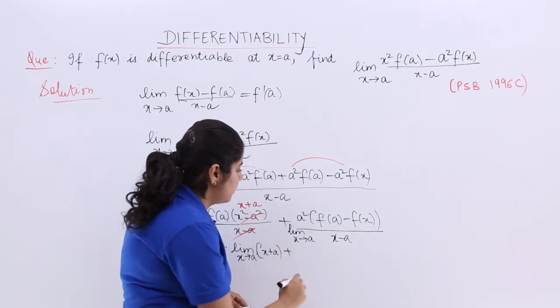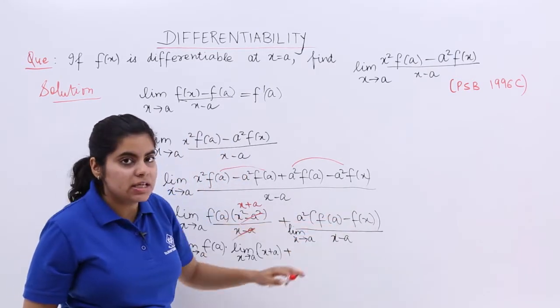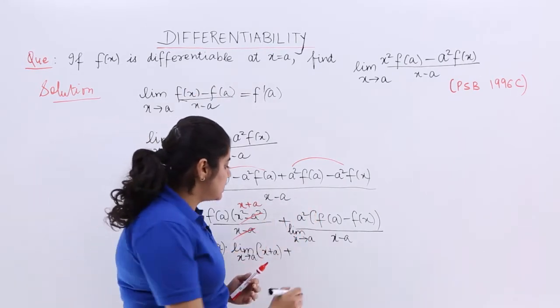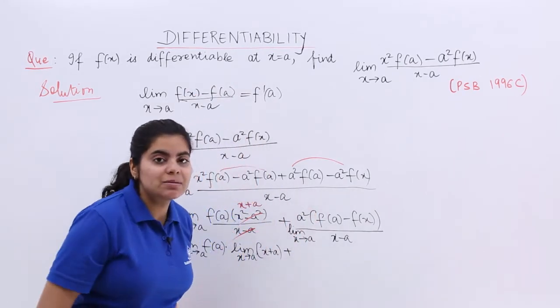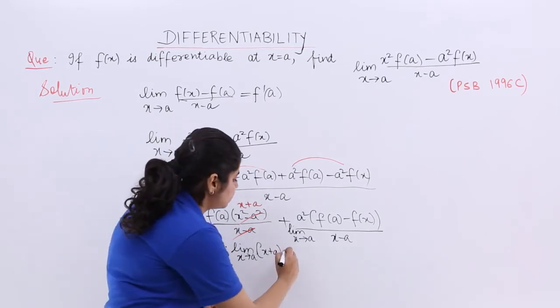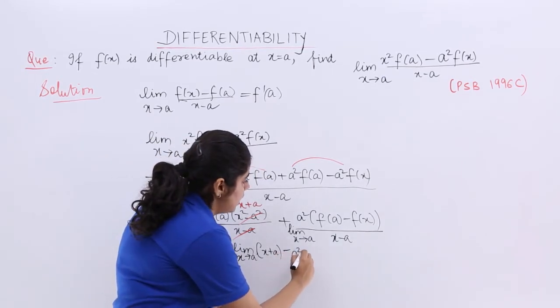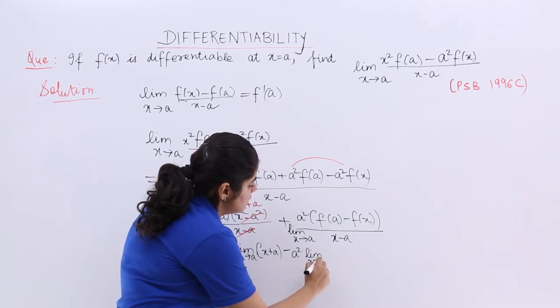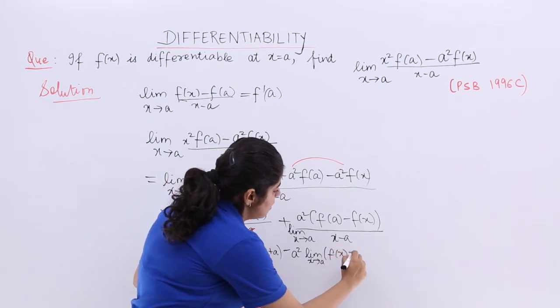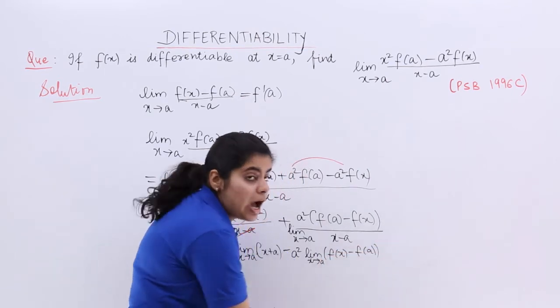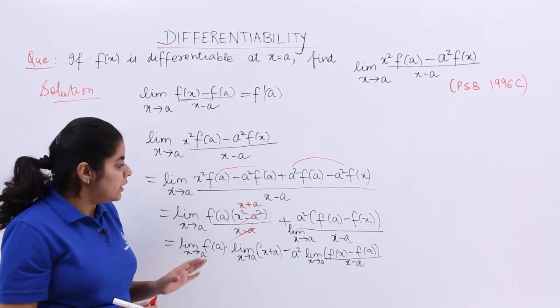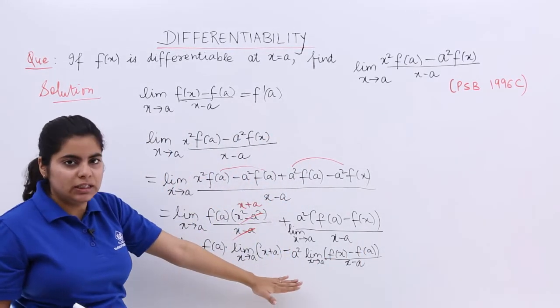Then we have f(a) - f(x), but it should be f(x) - f(a), much better. Let us take minus sign common. So plus minus becomes minus. So it is minus a² and then we have limit x tends to a, inside is [f(x) - f(a)]/(x - a).